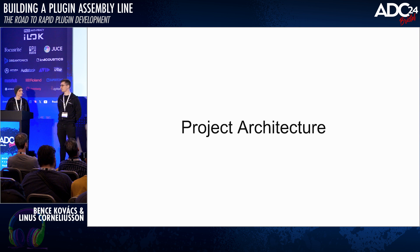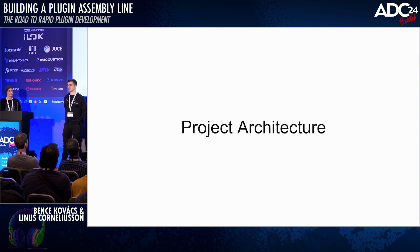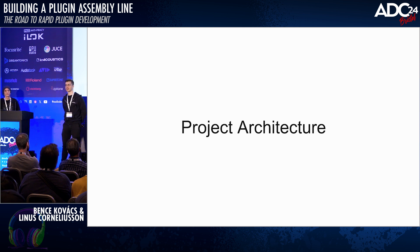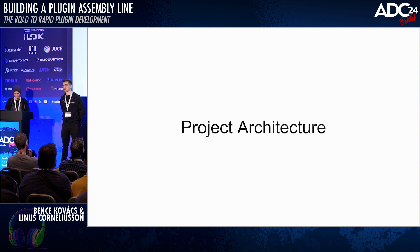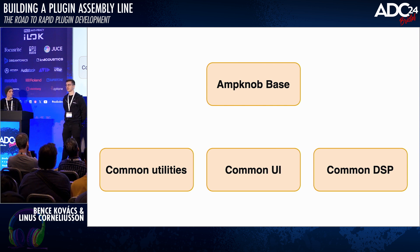We had a bunch of different AMP knobs already where we used to just copy the last project and iterate on the code there. But that meant we started having a lot of different versions of the same code living in different repositories, which became unsustainable. So we started to abstract the shared code into modules, added into our plugin repositories. We use JUCE user modules for these and they are added as Git submodules.